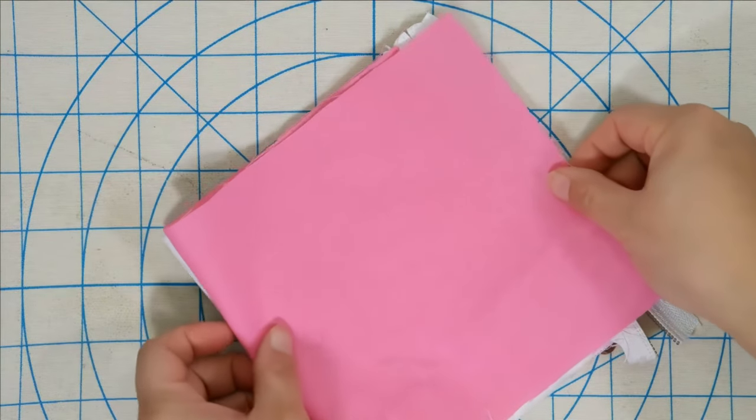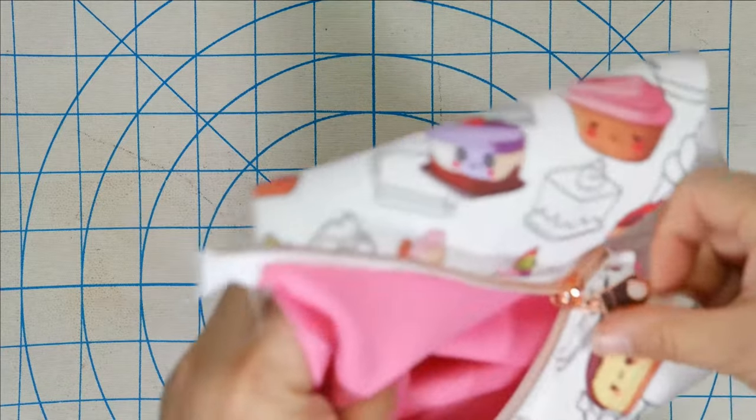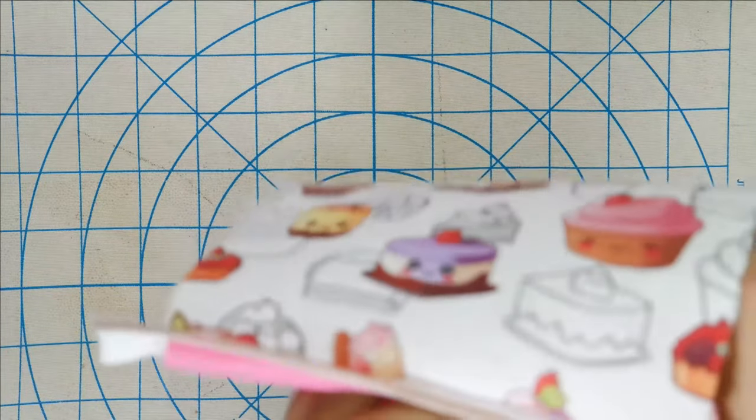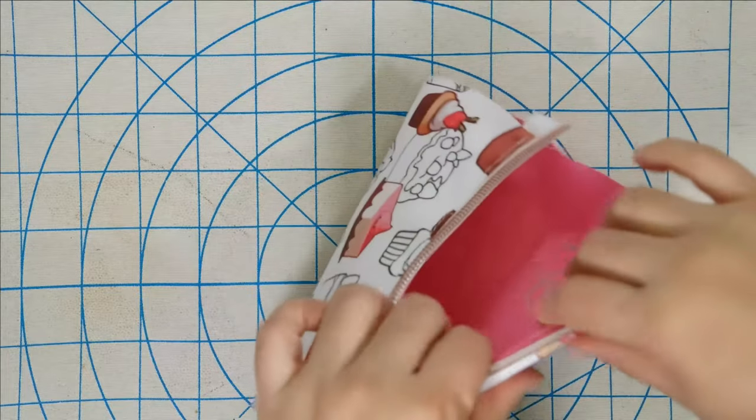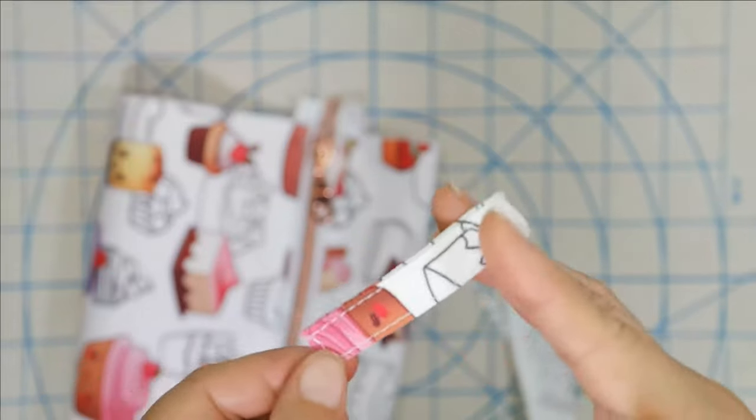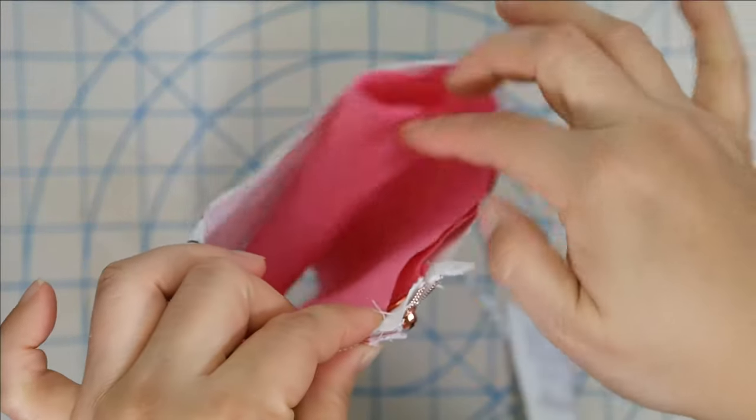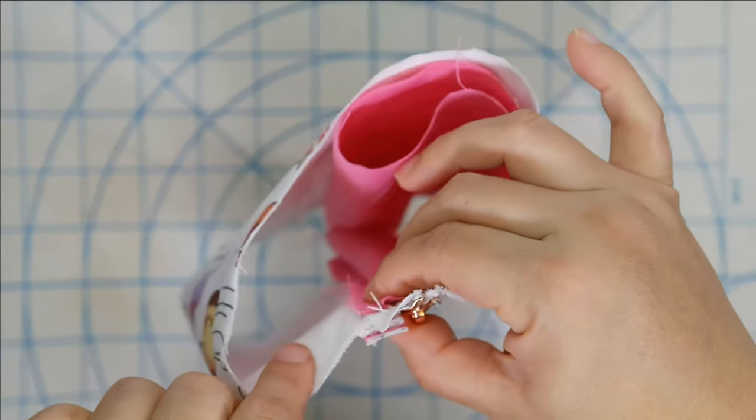And then we also will flip it out and topstitch as well. Once we finish this, you should have somewhat of a pouch with the interior fabric on the inside and the exterior fabric facing outwards. Once that happens, you can then attach the keychain tab, which makes sure you attach it on the exterior panel only, not the interior.